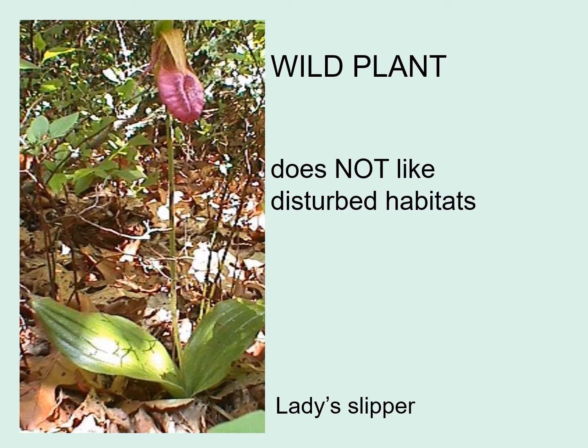A wild plant can be differentiated from a weed and a domesticated plant because wild plants do not like disturbed habitats. By disturbed habitat, I mean a place where somebody has dug up the ground, like in a garden. That's why gardeners who manage to grow something like the wild lady slipper are so proud of themselves — they're growing a plant that does not want to grow in a garden or disturbed habitat, and they're successfully growing it.